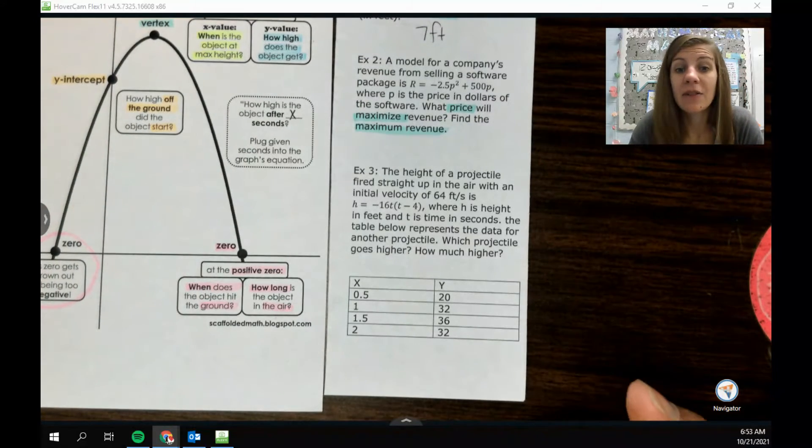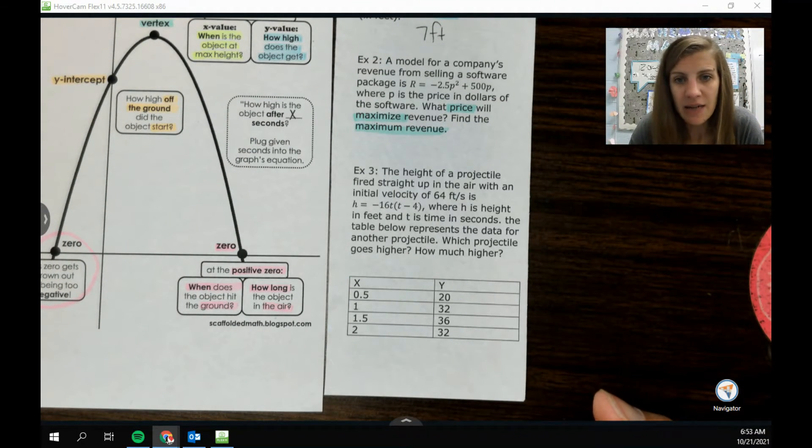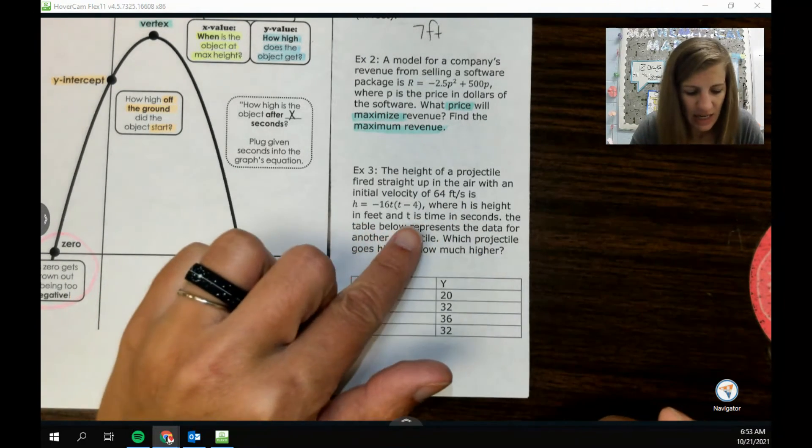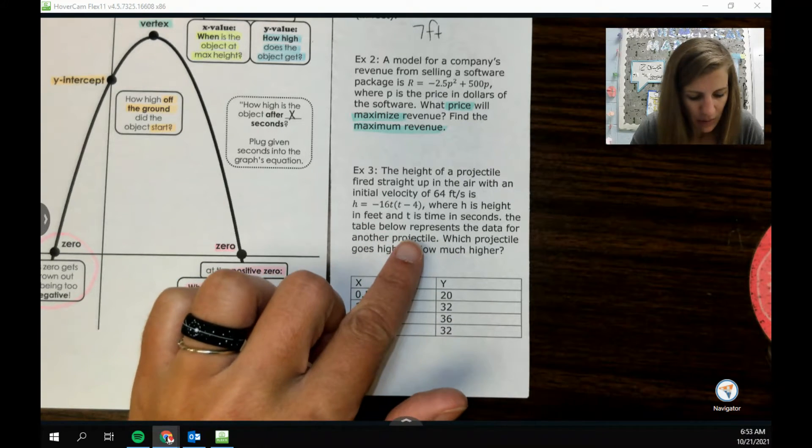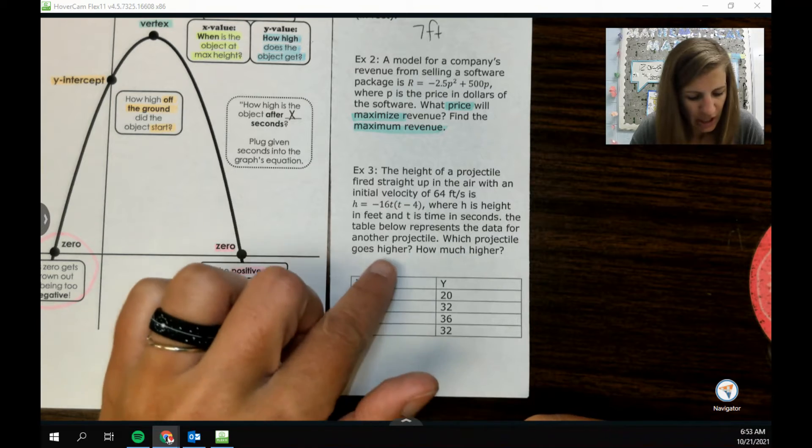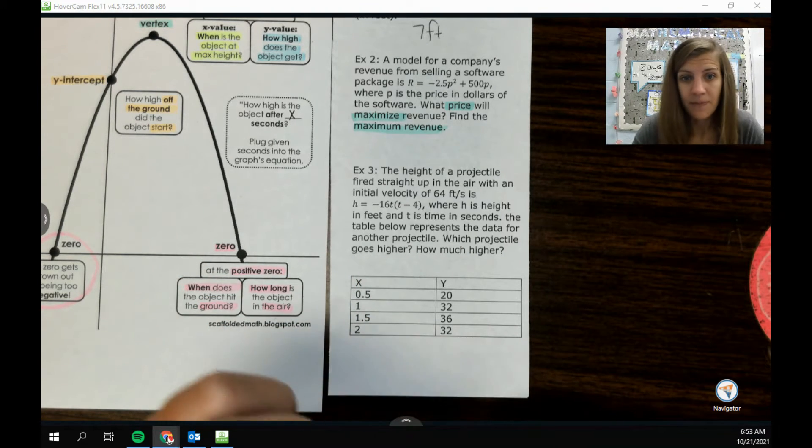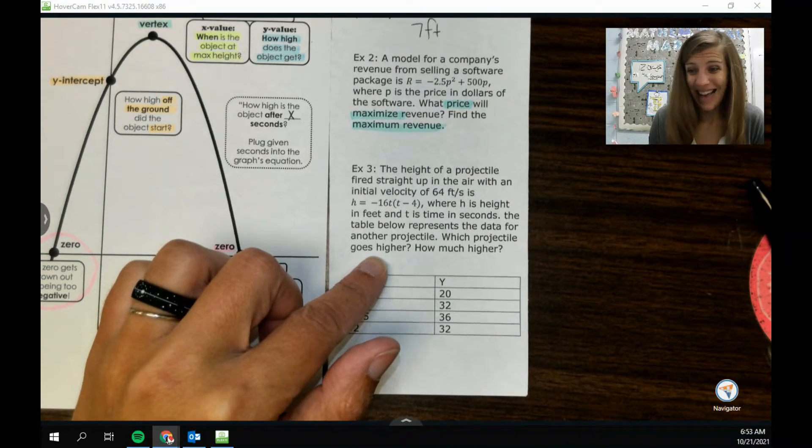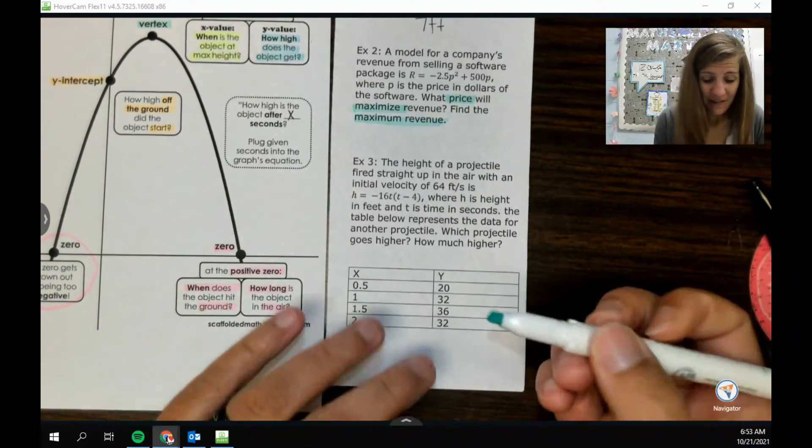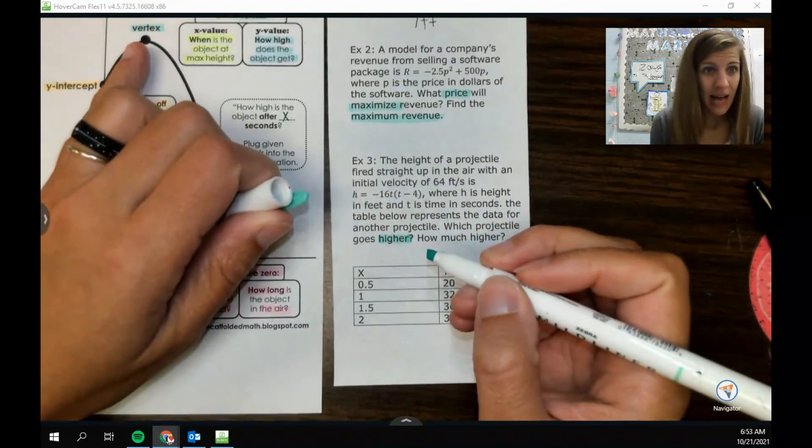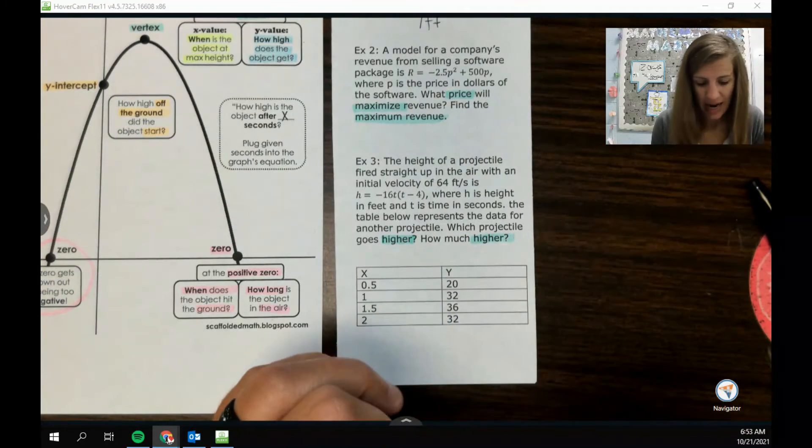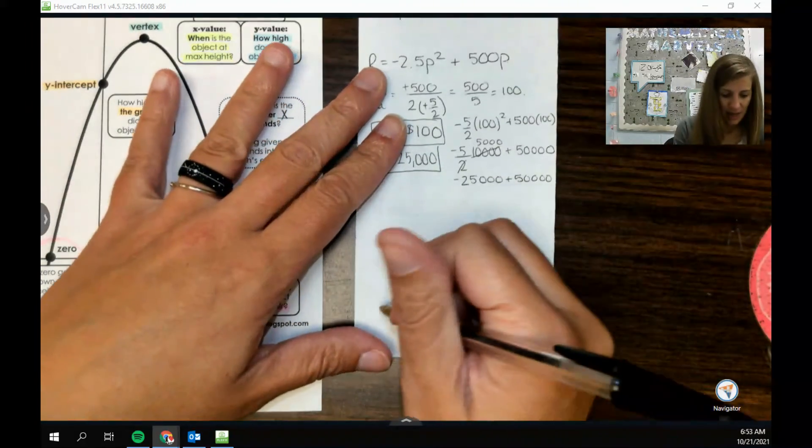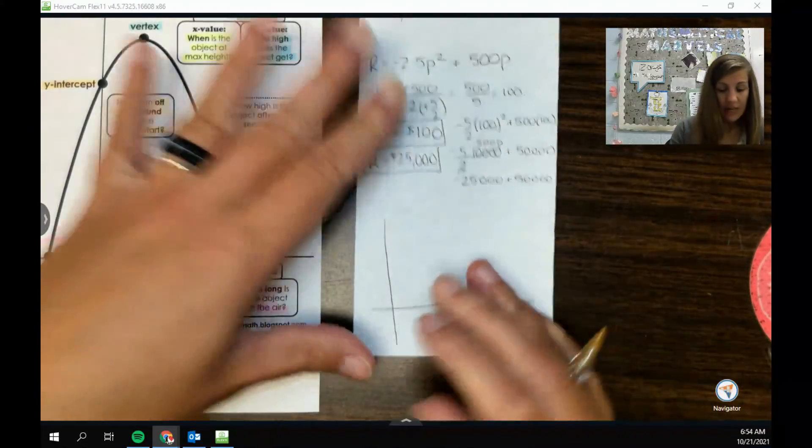The height of the projectile fired straight up in the air with an initial velocity of 64 feet per second is modeled by this equation here, where h is height in feet and t is time in seconds. The table below represents the data for another projectile. Which projectile goes higher, how much higher? So we are trying to figure out how high it goes. Again I think I am asking for another vertex value because how high is like the maximum, and then like how much higher, well also a maximum. So I'm going to do a little sketch on the back here of these two parabolas, I think, because we have the equation parabola and then we have the table parabola.